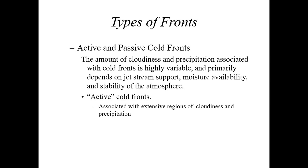If we have a stable atmosphere, we would have warm air aloft over a cooler surface. In general, that's going to determine whether you have thunderstorms and showery precipitation versus more steady, continuous precipitation.